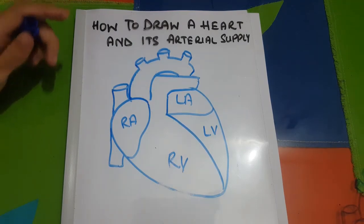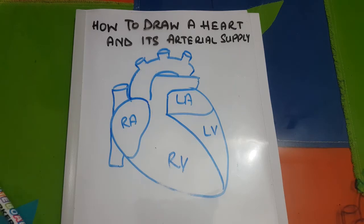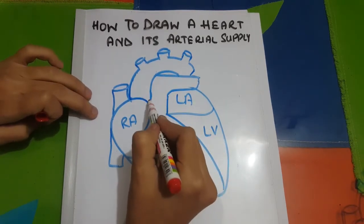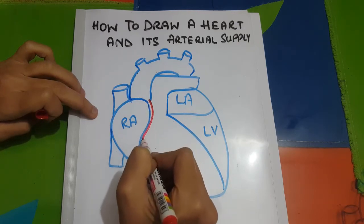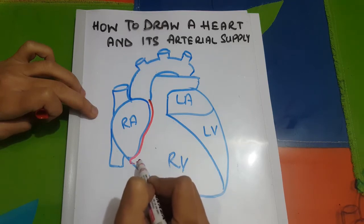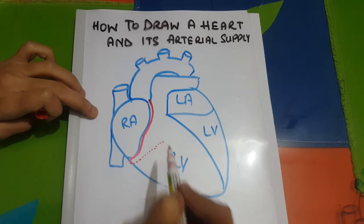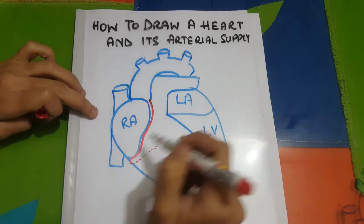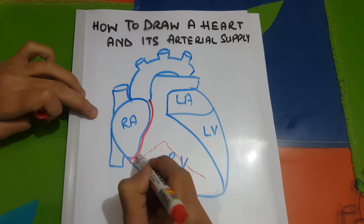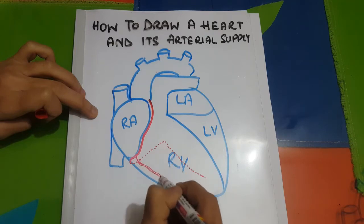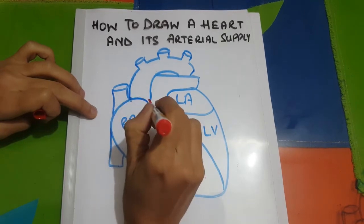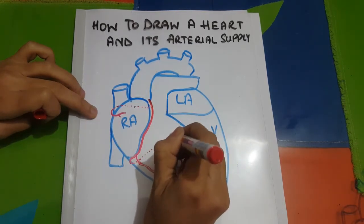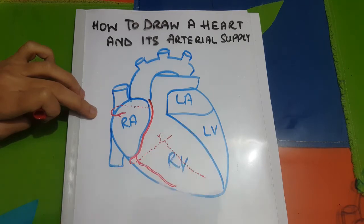Now we will make the blood supply of the heart. The right coronary artery originates from the anterior surface of the aorta at its base. It runs in the right atrioventricular groove and then goes to the back — arteries at the back are drawn with a dotted line. It gives a posterior interventricular artery, a marginal artery, and an artery to the SA node at the beginning.